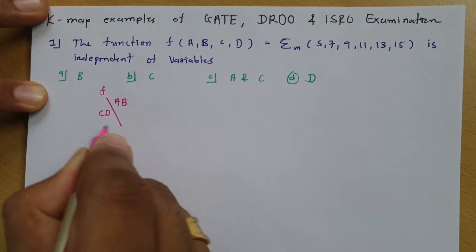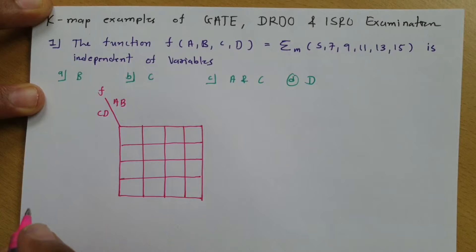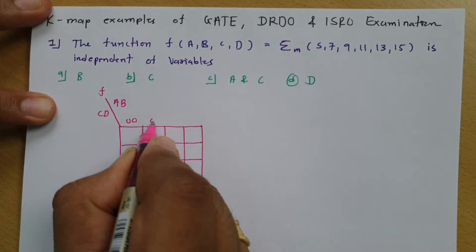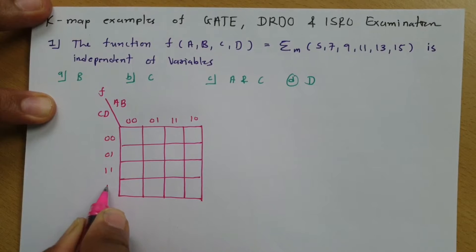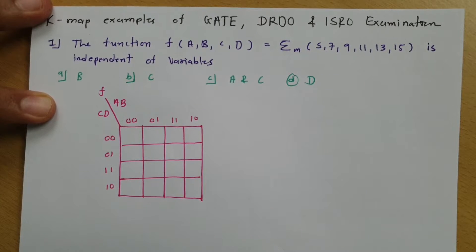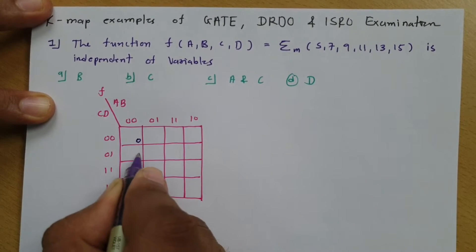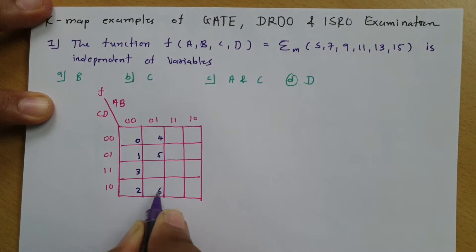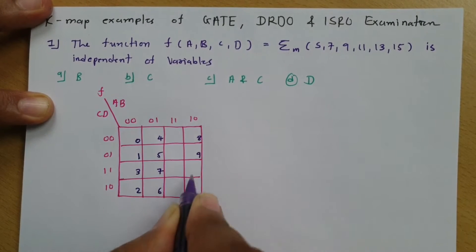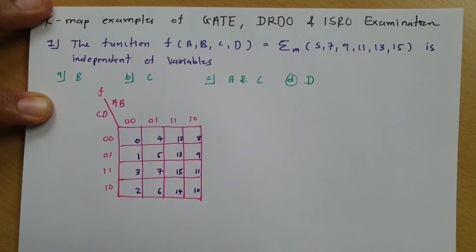ABCD are the inputs. I am drawing the four-variable KMAP. The values of AB are 00, 01, 11, 10, and similarly CD follows the same pattern. The location positions start from 0: 0000 is 0, 0001 is 1, 0010 is 2, then 3, 4, 5, 6, 7, 8, 9, 10, 11, 12, 13, 14, and 15.